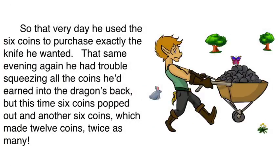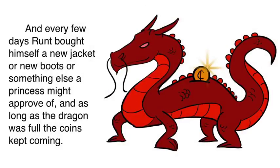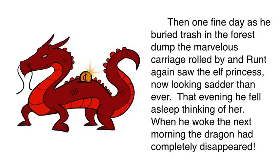So that very day, he used the six coins to purchase exactly the knife he wanted. That same evening, again, he had trouble squeezing all the coins he'd earned into the dragon's back, but this time six coins popped out, and another six coins, which made twelve coins, twice as many. And every few days, Runt bought himself a new jacket, or new boots, or something else a princess might approve of, and as long as the dragon was full, the coins kept coming.